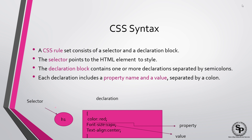Now let's look at CSS syntax. A CSS rule set consists of a selector and a declaration block. The selector points to the HTML element you want to style. The declaration block defines the properties and contains one or more declarations separated by semicolons. Each declaration includes a property name and a value separated by a colon.